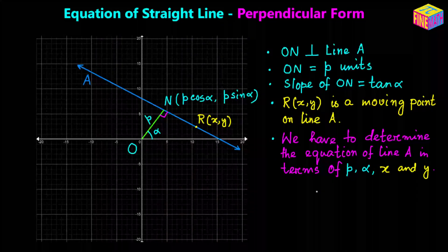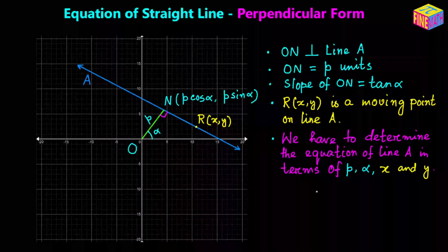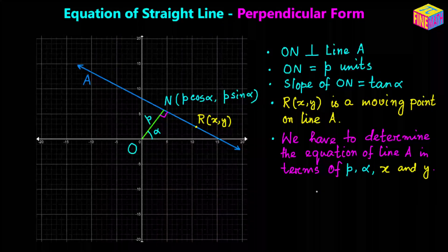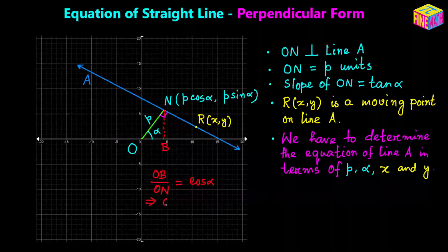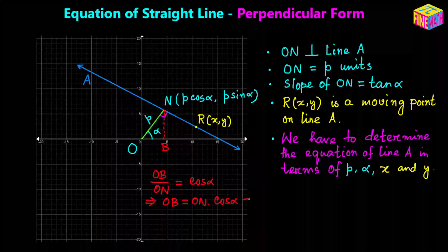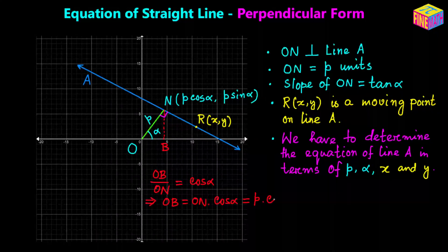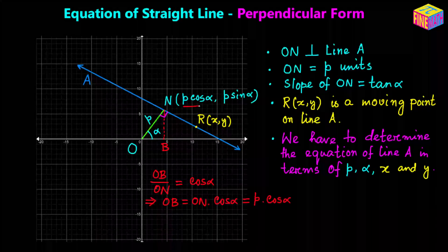So the slope of ON is tangent of alpha. Now let's assume there is a variable point on straight line A, point R, whose coordinates are (x, y). Let's drop a perpendicular from N onto the x-axis, landing on point B. Then OB equals p times cosine of alpha, since cosine(alpha) = OB/ON and ON = p. So the x-coordinate of N is p·cos(alpha). Similarly, the y-coordinate of N is p·sin(alpha).